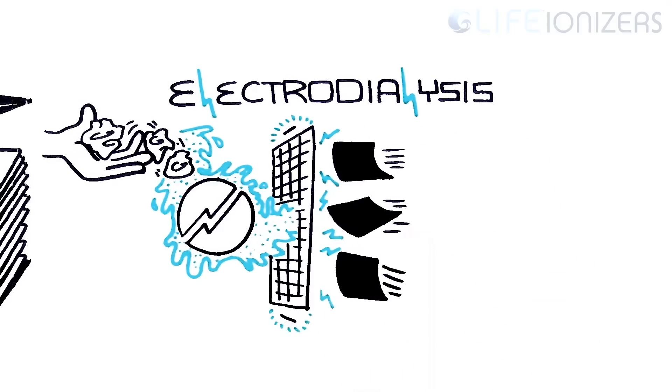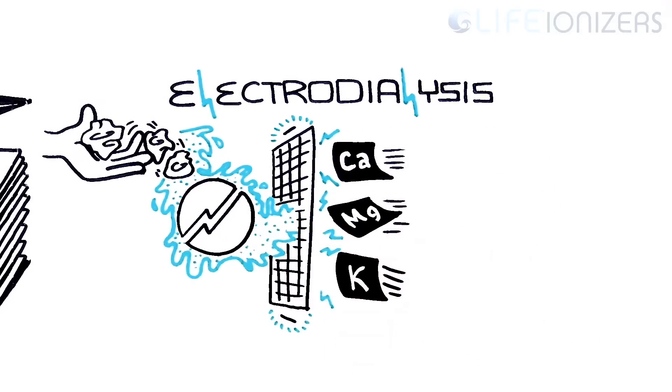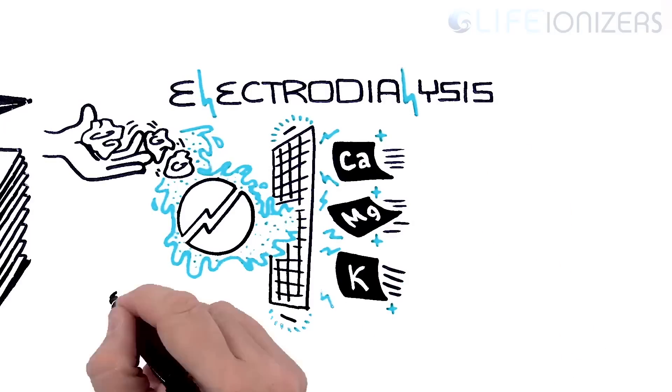Positively charged ions, such as calcium, magnesium, and potassium, are drawn toward the negatively charged plate, also known as the cathode.